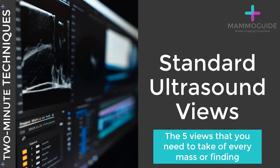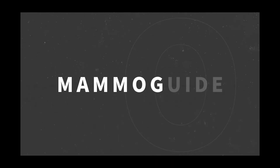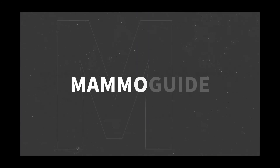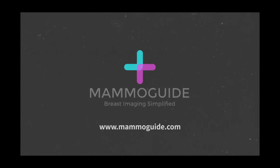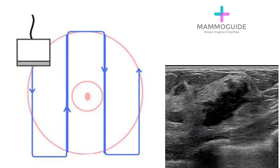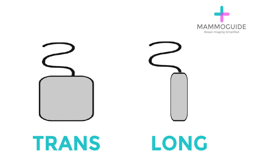In breast ultrasound, what are the five views that you need to take of every mass or finding? When you are performing breast ultrasound, scanning through the breast, and suddenly you see a mass, what pictures do you need to take in order to adequately characterize it? First of all, it's important to image the lesion from several different angles, typically in a transverse and longitudinal orientation.